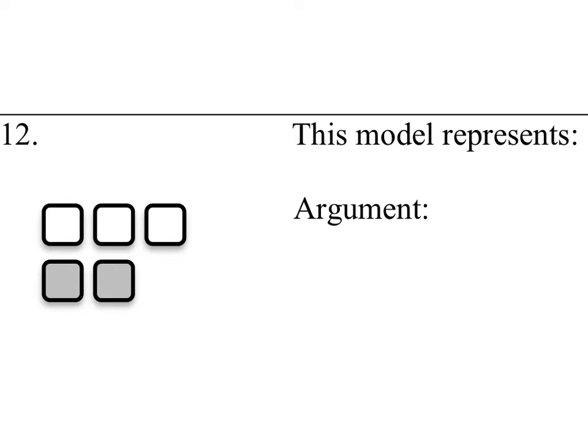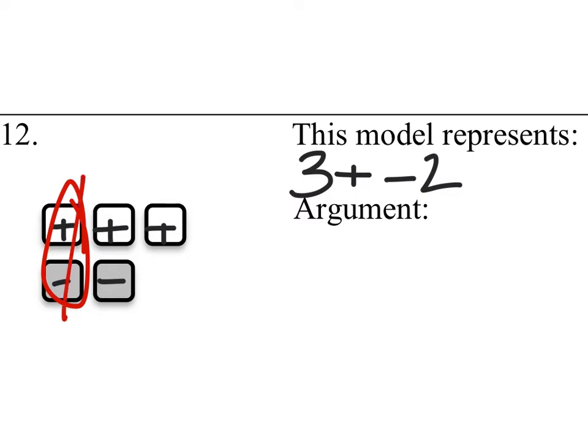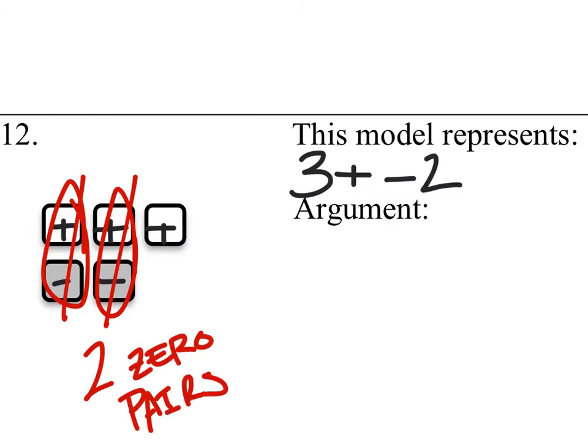This is number 12 on the worksheet. So right here it says what does this model represent? I'm going to put a plus in the positive ones just so we can tell the difference. So I've got these three positive ones because they are white, and then these gray ones are negatives. So what does this model really represent? We have three positive ones and then we're going to add to this two negative ones. You see that? So when we look at this, how many zero pairs do we got? Well, we've got these two. That positive and negative will cancel out, and then this positive and negative will also cancel out. That's two zero pairs. So in the end, after those are canceled out, we've just got this last one left. So it really just represents a positive one.